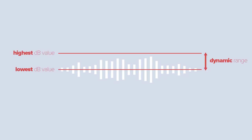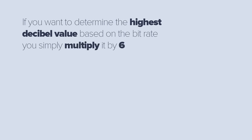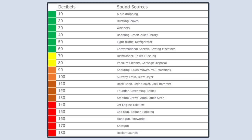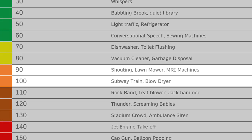Bitrate determines the dynamic range of our audio signal, which basically means how loud it would get. Good news — the math here is simple. If you want to determine the highest decibel value based on the bitrate, you simply multiply it by 6. For example, if our bitrate is 16, we multiply it by 6 and get 96. So our audio will get as loud as 96 dB, which when we take a look at the scale with examples, we can see is definitely enough.